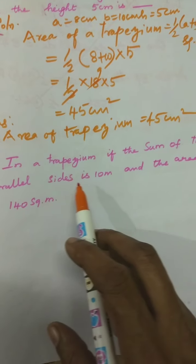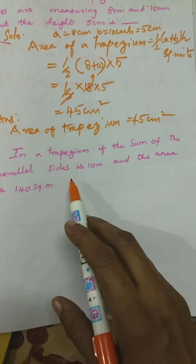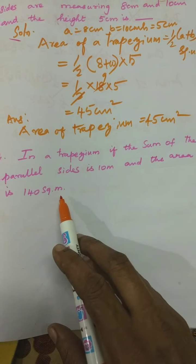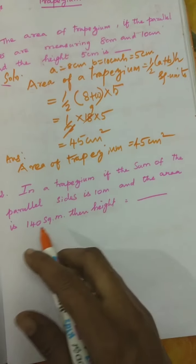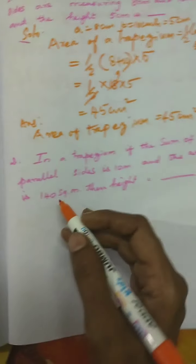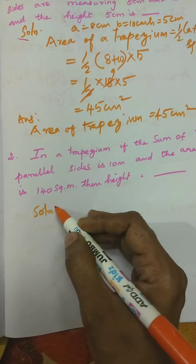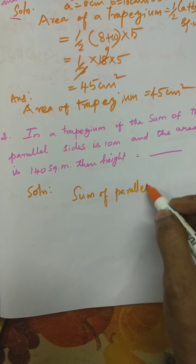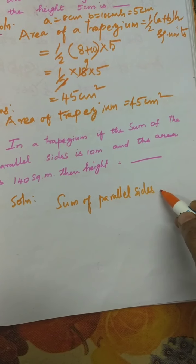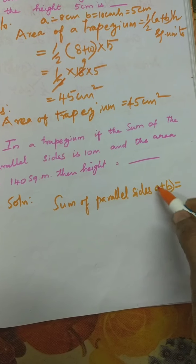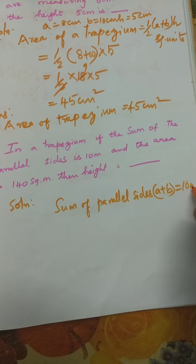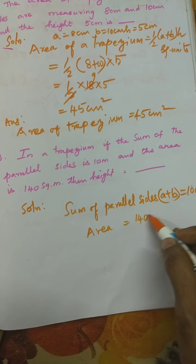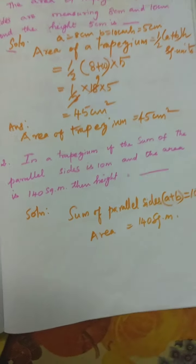Then second one. In a trapezium, if the sum of the parallel sides is 10 meter and the area is 140 square meter, then the height is equal to dash. Sum of parallel sides means A plus B is equal to 10 meter. Area is given as 140 square meter. Now you have to find the height.